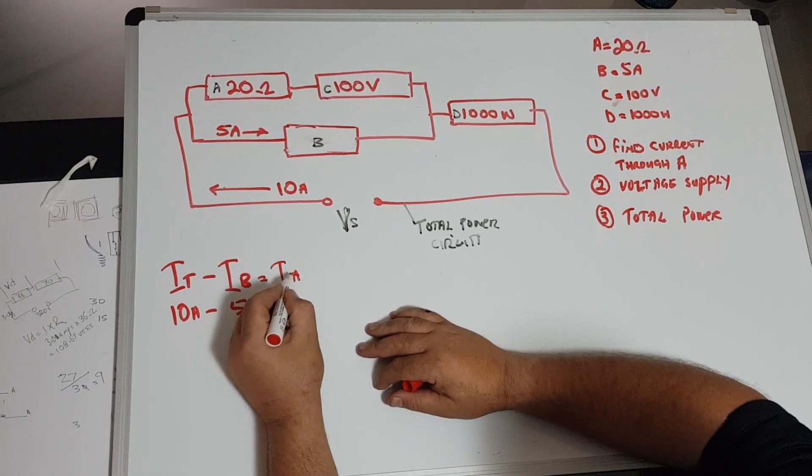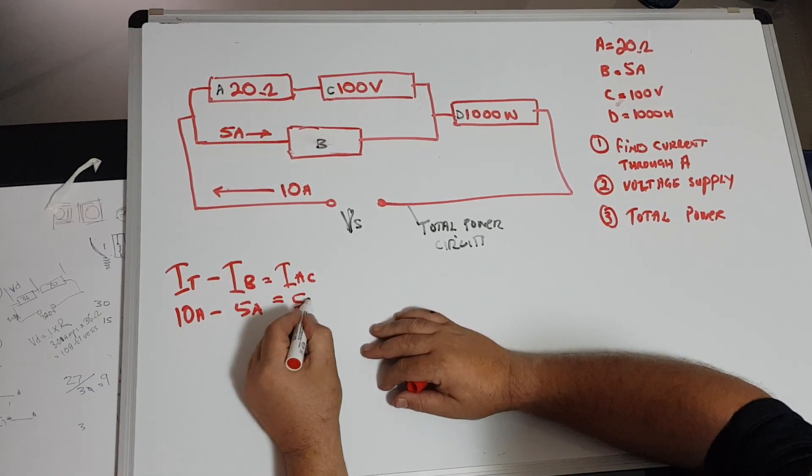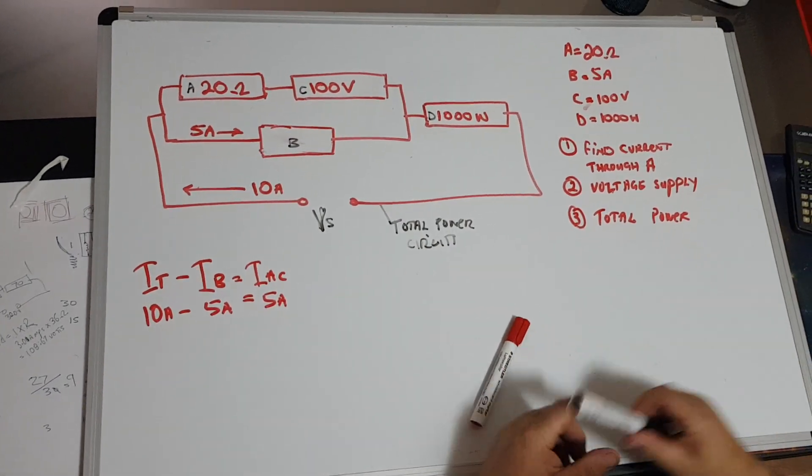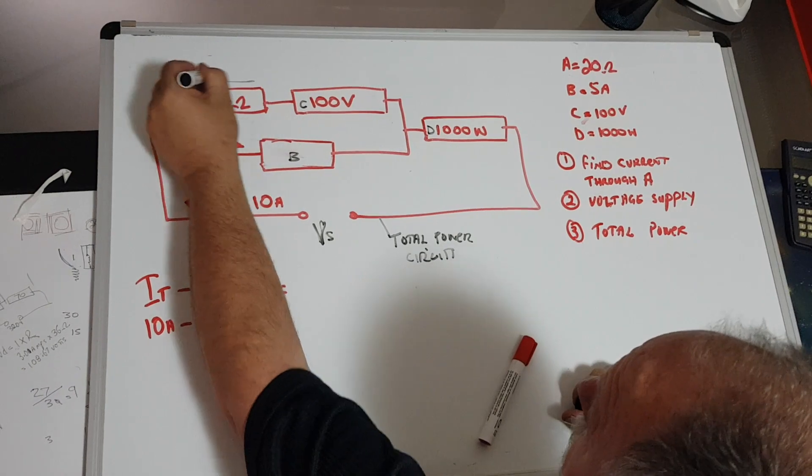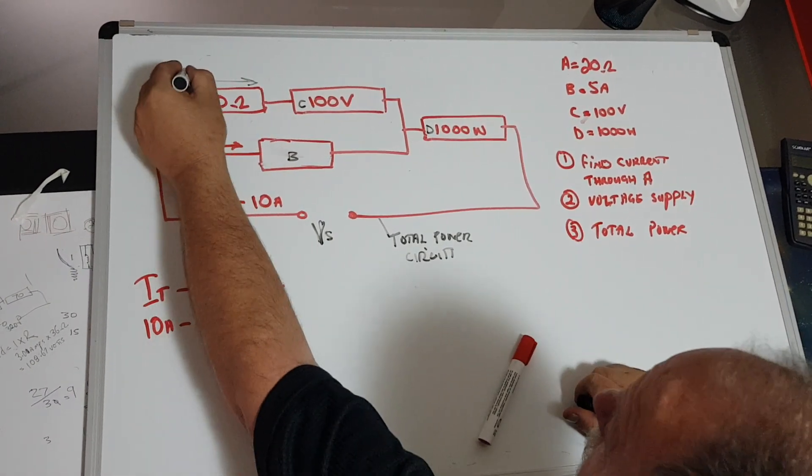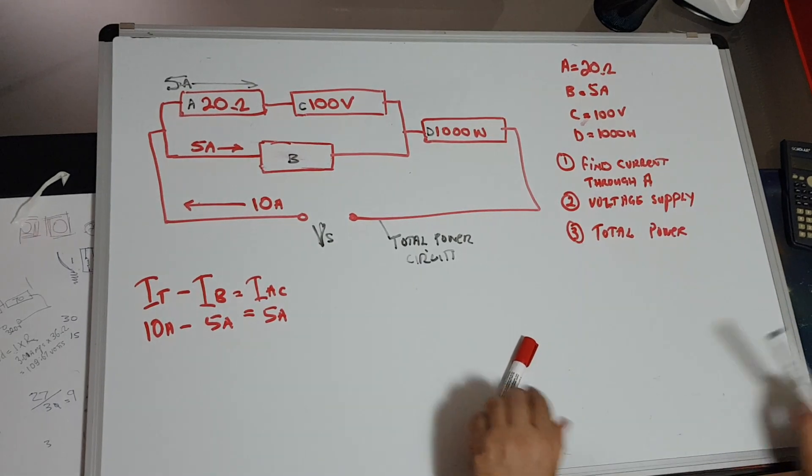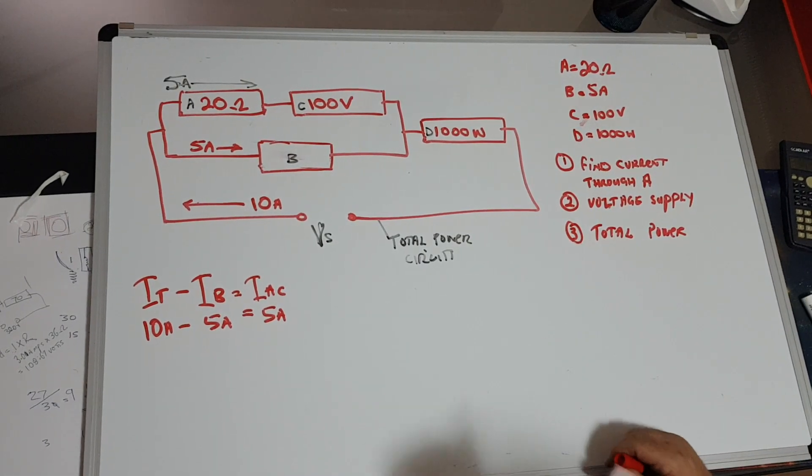Which equals I_AC, which equals 5 amps. So now we have 5 amps flowing through here.